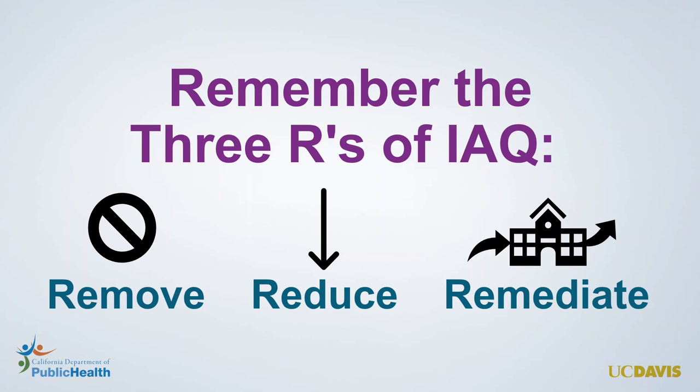Ventilation and filtration are such important strategies for improving indoor air quality that we'll discuss them in both the second and third module series, too. Now you know the three R's: remove sources, reduce sources, and remediate the air. Together, the three R's represent our key strategies for improving indoor air quality and can help us remember what to do as we assess buildings for opportunities to improve IAQ.